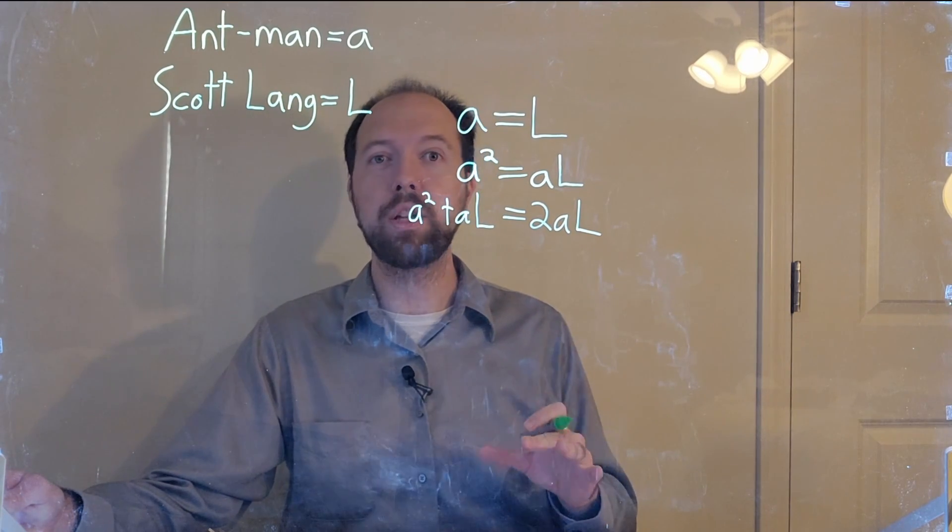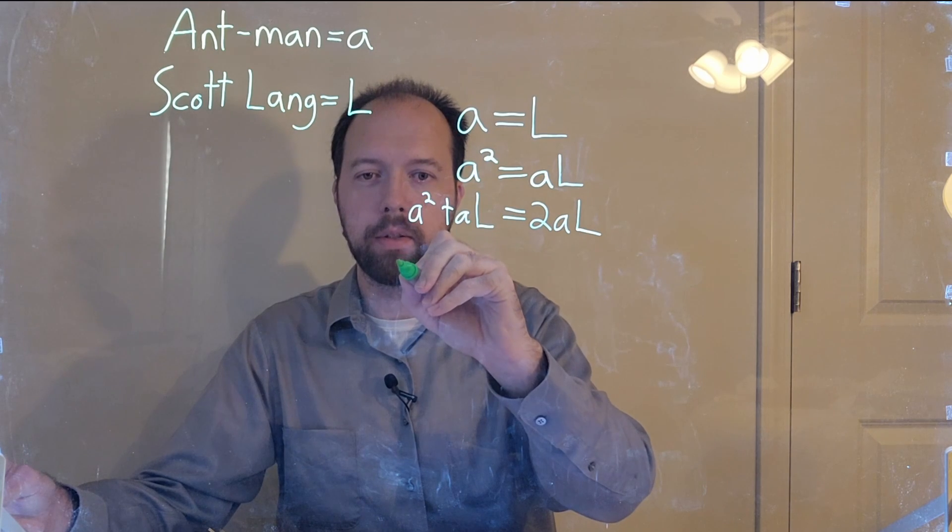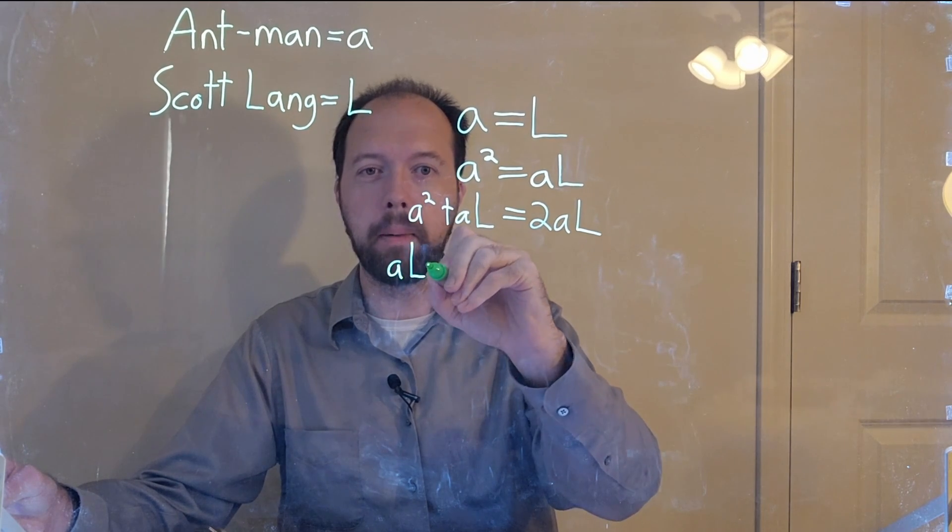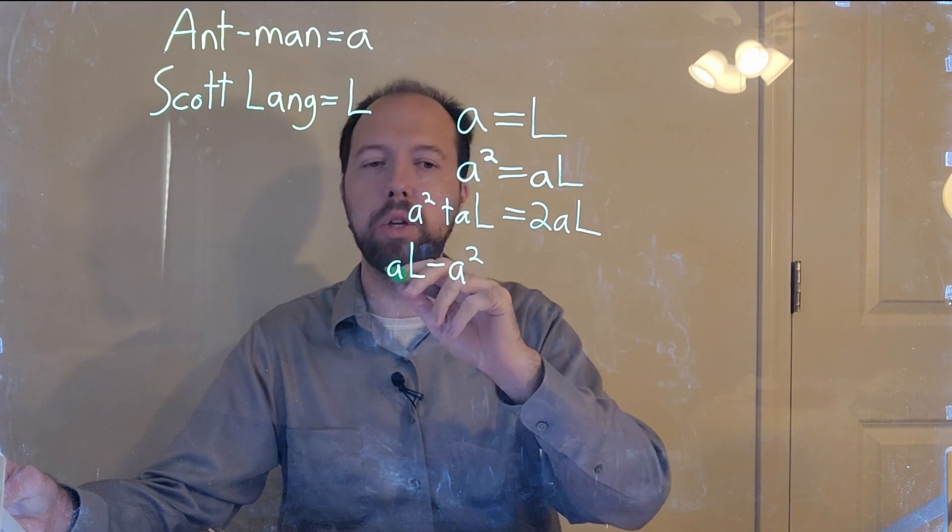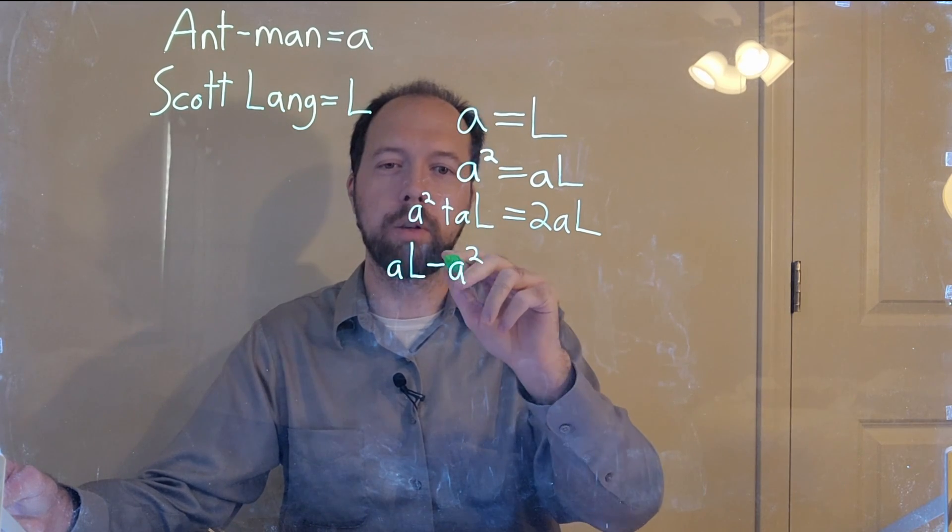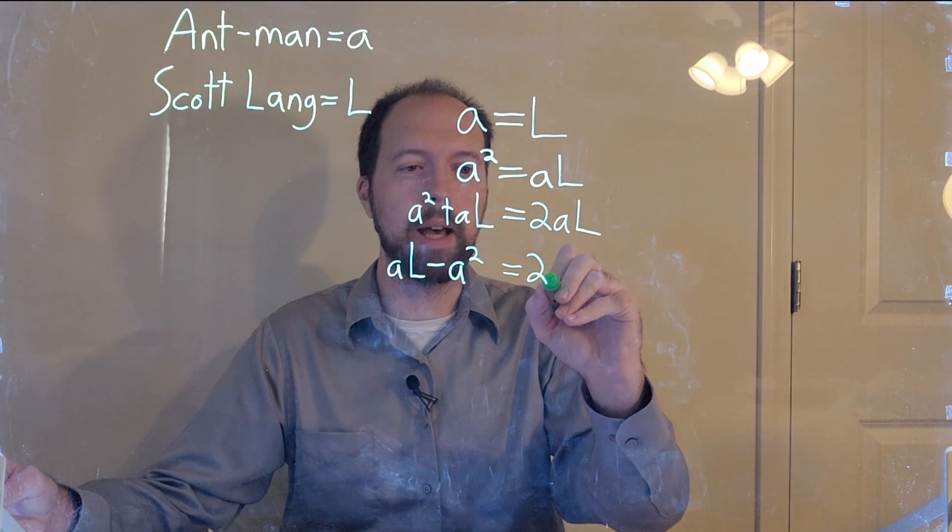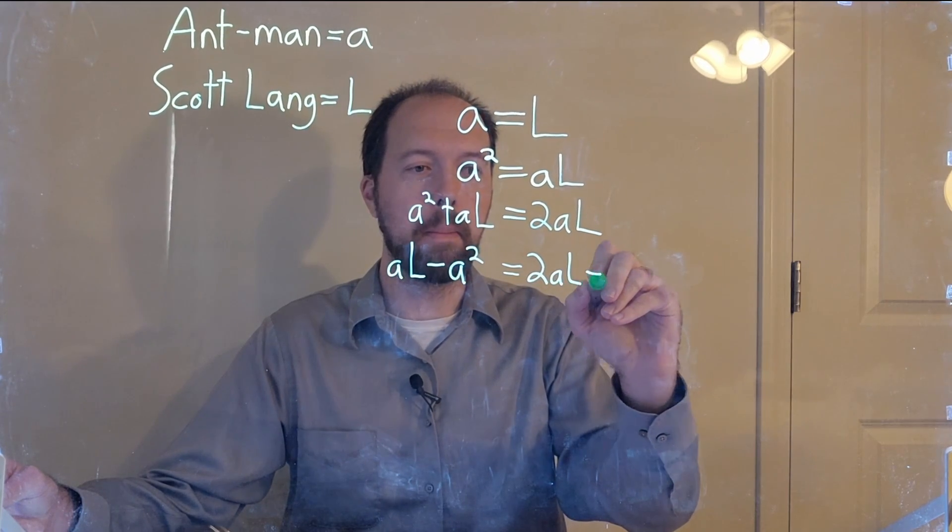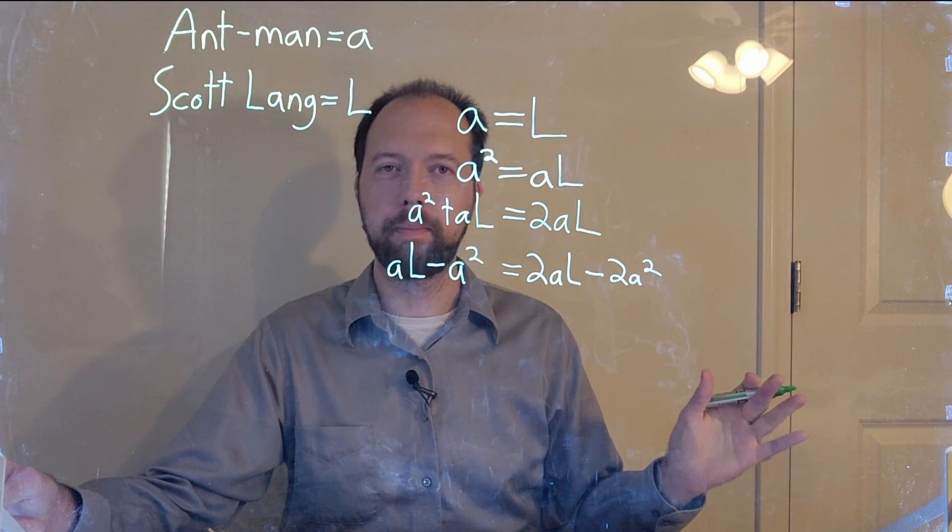Next, we will subtract 2A squared from both sides. So on this side, we have AL minus A squared. So we have 1A squared here, subtract 2, it gives us negative 1A squared. So AL minus A squared is equal to 2AL minus 2A squared.